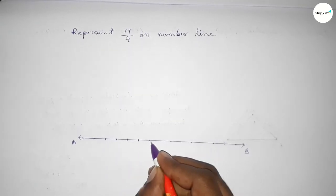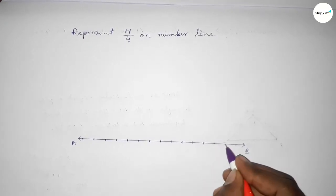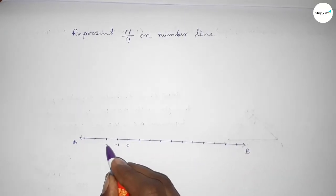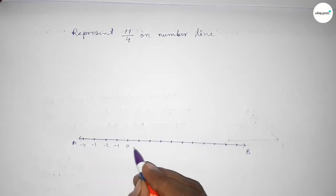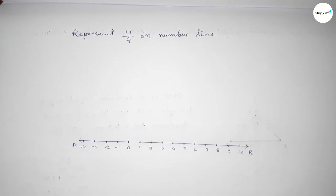First, marking the numbers on the line with deep color to understand perfectly. Now taking here starting number 0, minus 1, minus 2, minus 3, minus 4, and this side 1, 2, 3, 4, 5, 6, 7, 8, 9, 10.